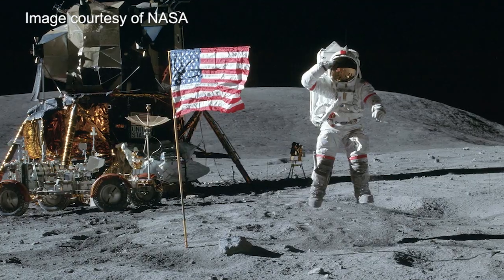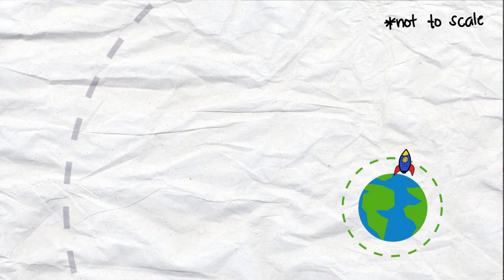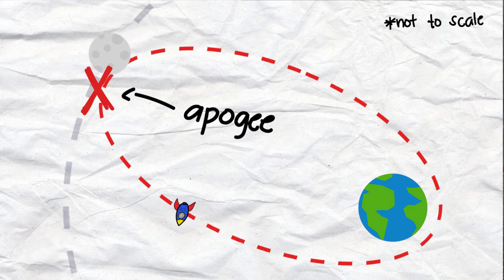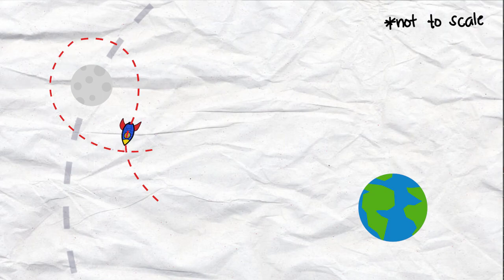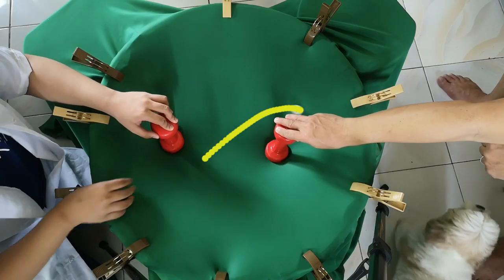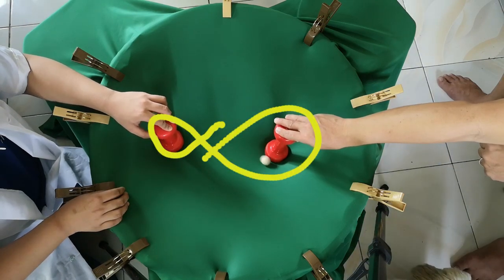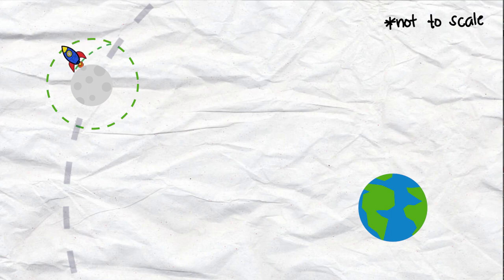Now let's see how we went to the Moon. The Apollo 11 mission used a maneuver called the Translunar Injection. The spacecraft first goes into a circular orbit around the Earth, then accelerates to a Hohmann transfer orbit, which is elliptical. The apogee should line up with the Moon's orbit. As the spacecraft gets closer to the Moon, lunar gravity starts attracting it. Without friction, it would keep moving back and forth in a figure-eight pattern — but we don't want that. So the spacecraft slows down to circularize its orbit around the Moon, then further decelerates to land.